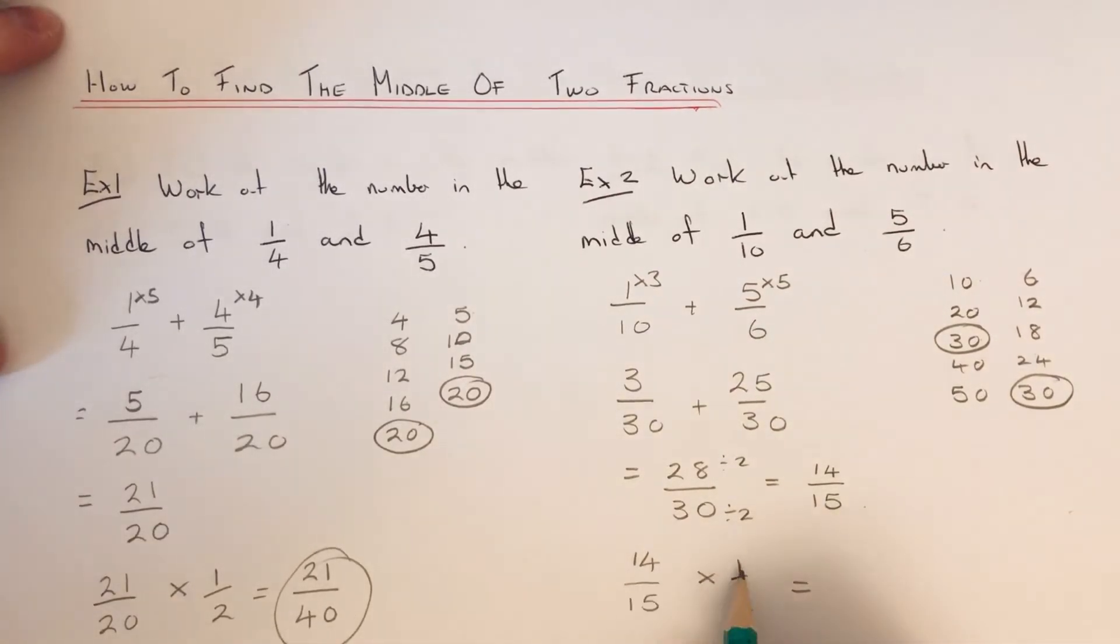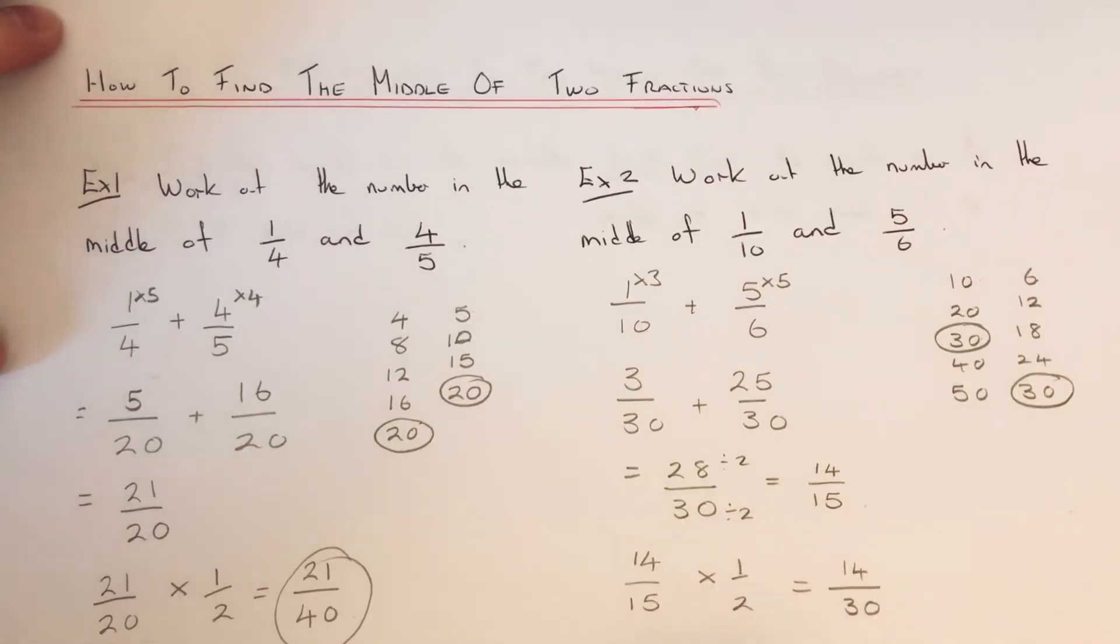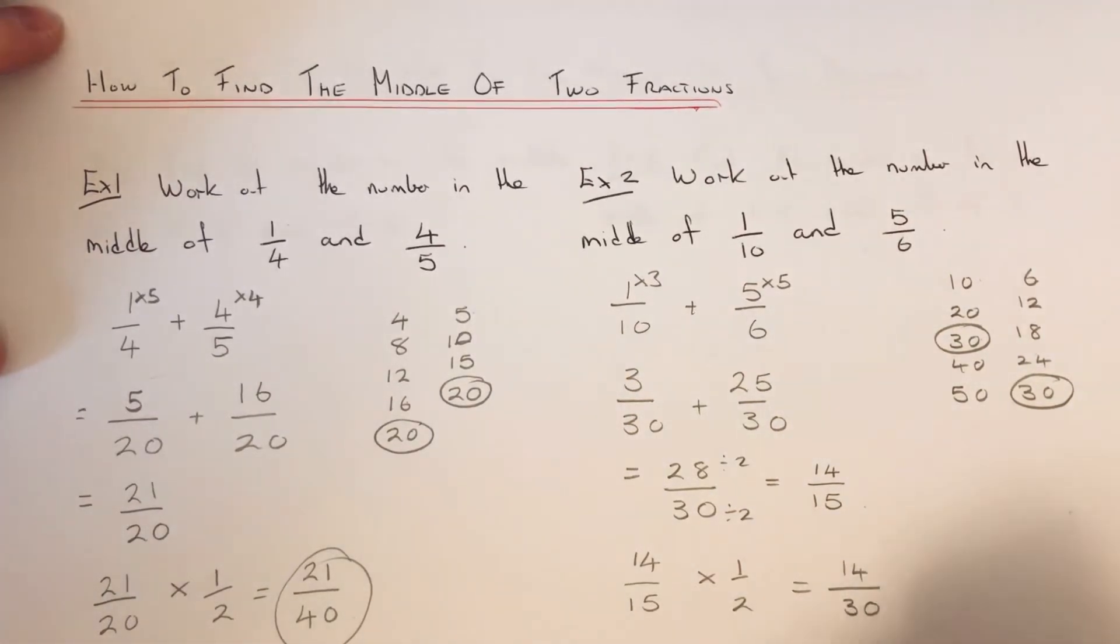So fourteen times one is fourteen. Fifteen times two is thirty. Again, we can simplify this fraction by dividing by two to give a final answer of seven fifteenths.